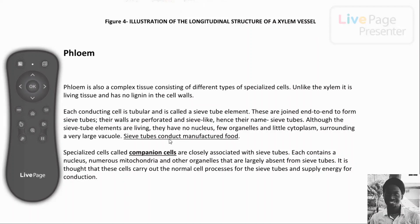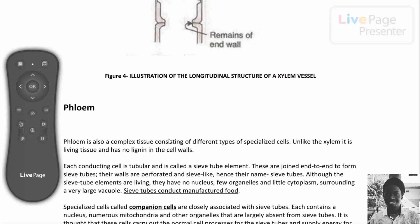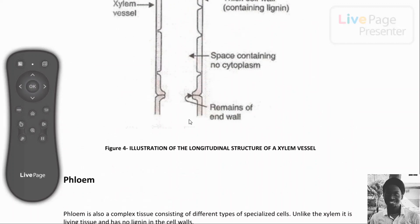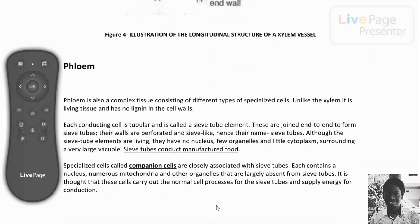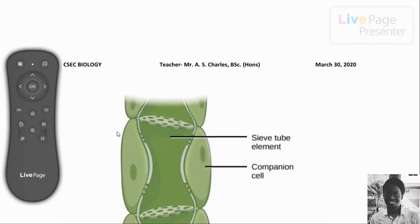Whereas in xylem the end walls are completely broken down, in sieve tubes the end walls are not completely broken down. As seen in the diagram, the end walls remain but they have perforations — holes in the wall that allow them to function like a sieve or strainer. So the cross walls are not completely broken down; they have perforations that resemble a sieve.